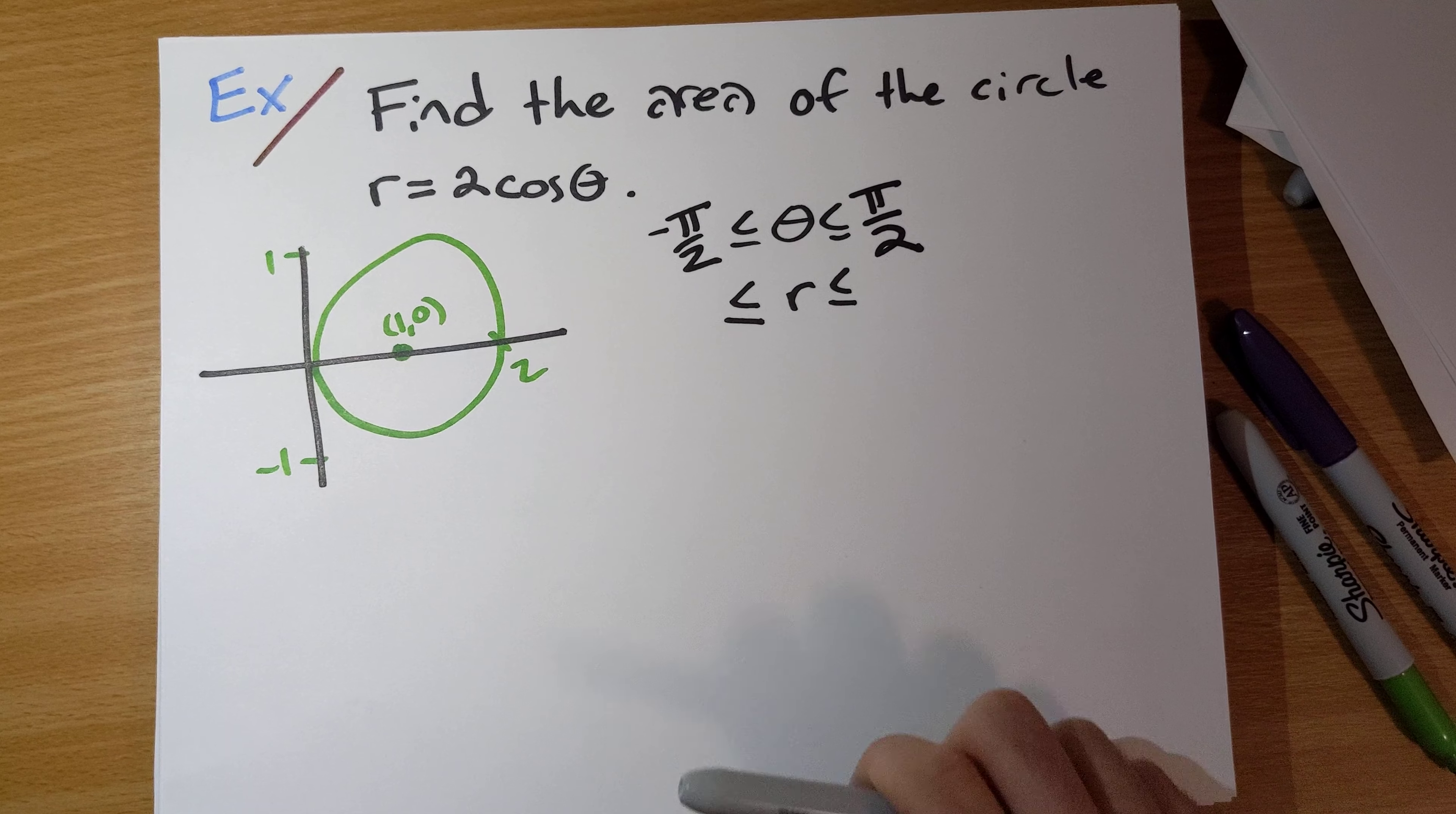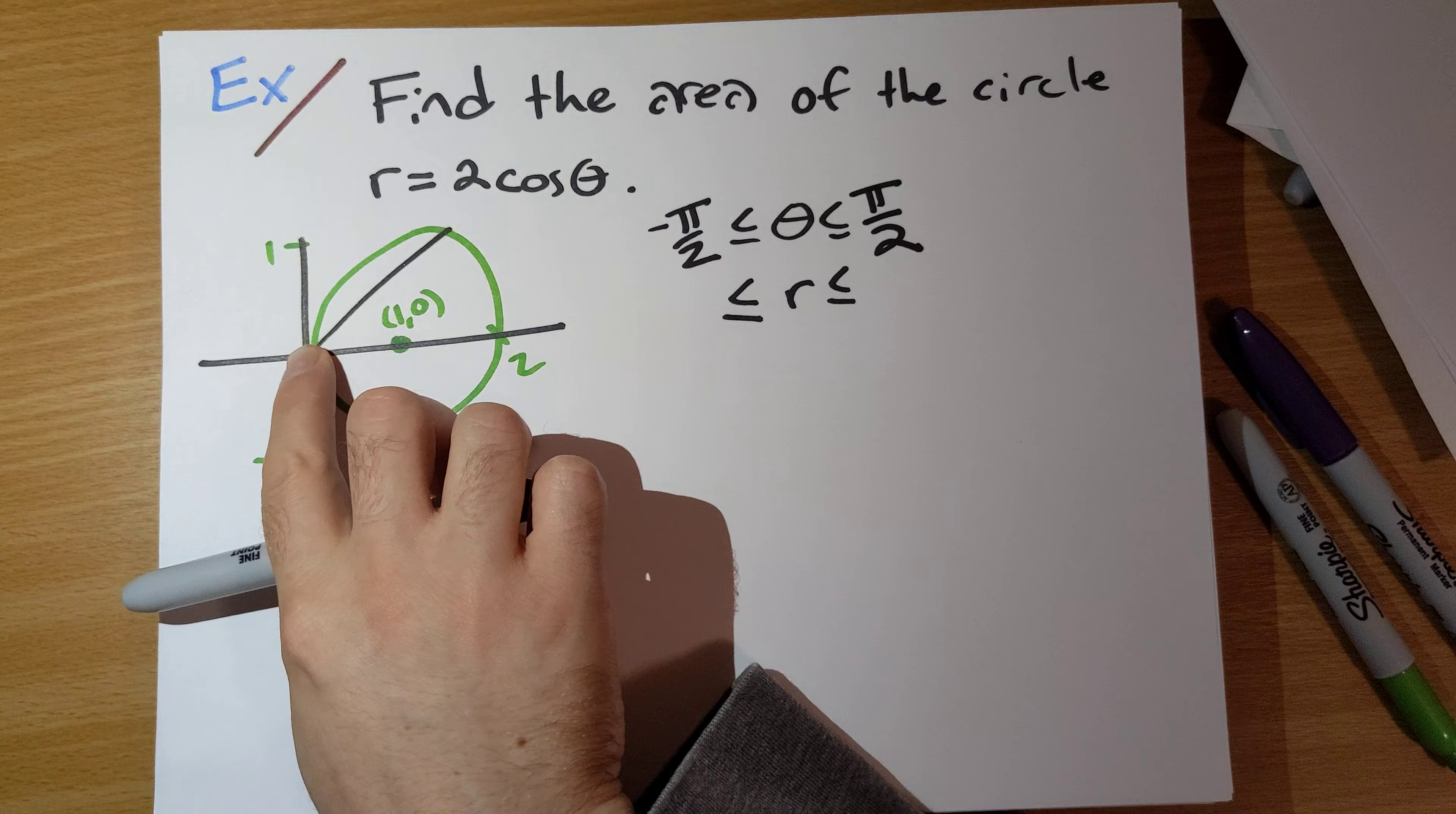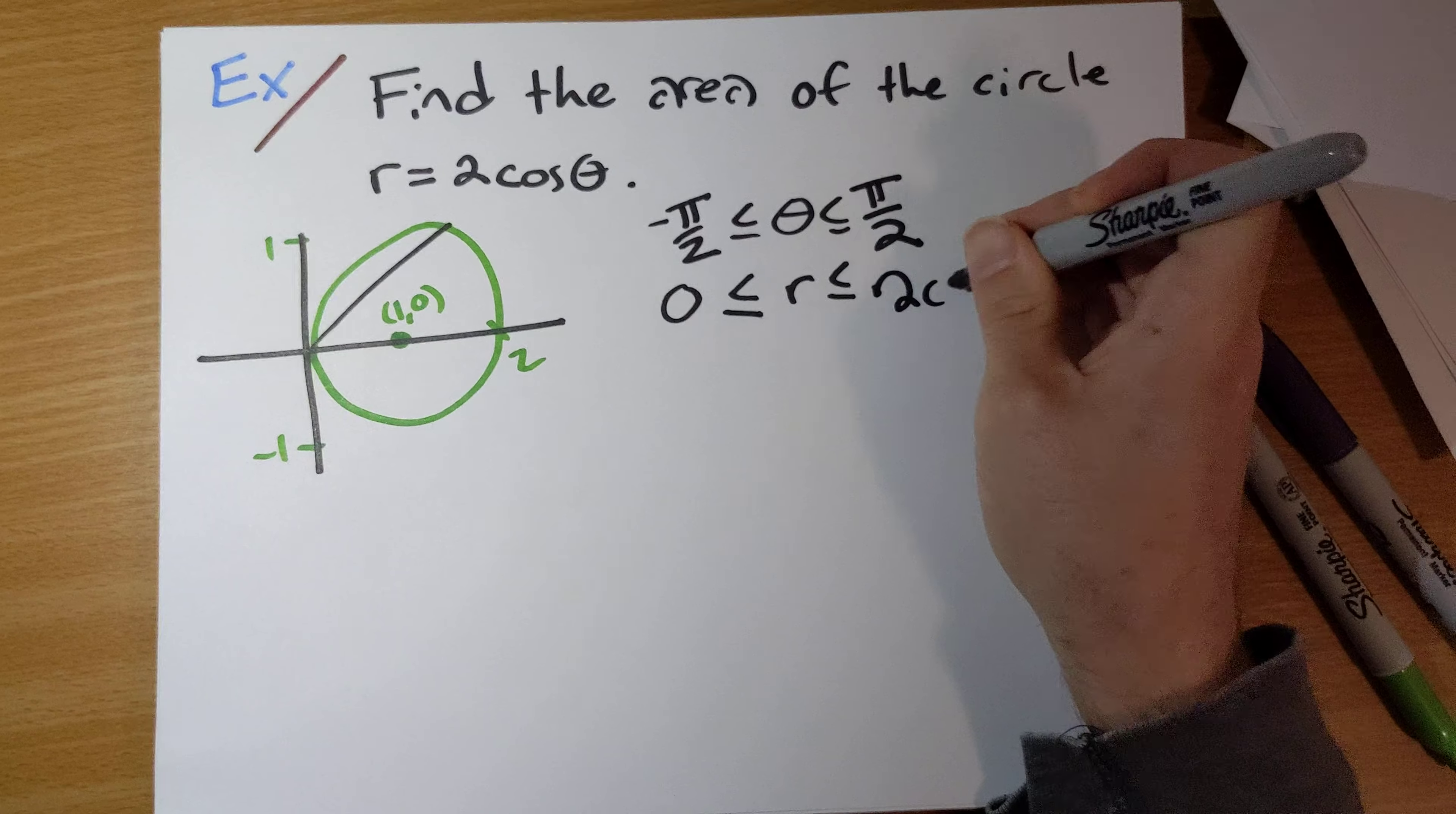How about r? So for a fixed value of θ, the smallest r can be is 0. And the biggest r can be here is when we hit this circle out here. And this is r = 2 cosine θ.